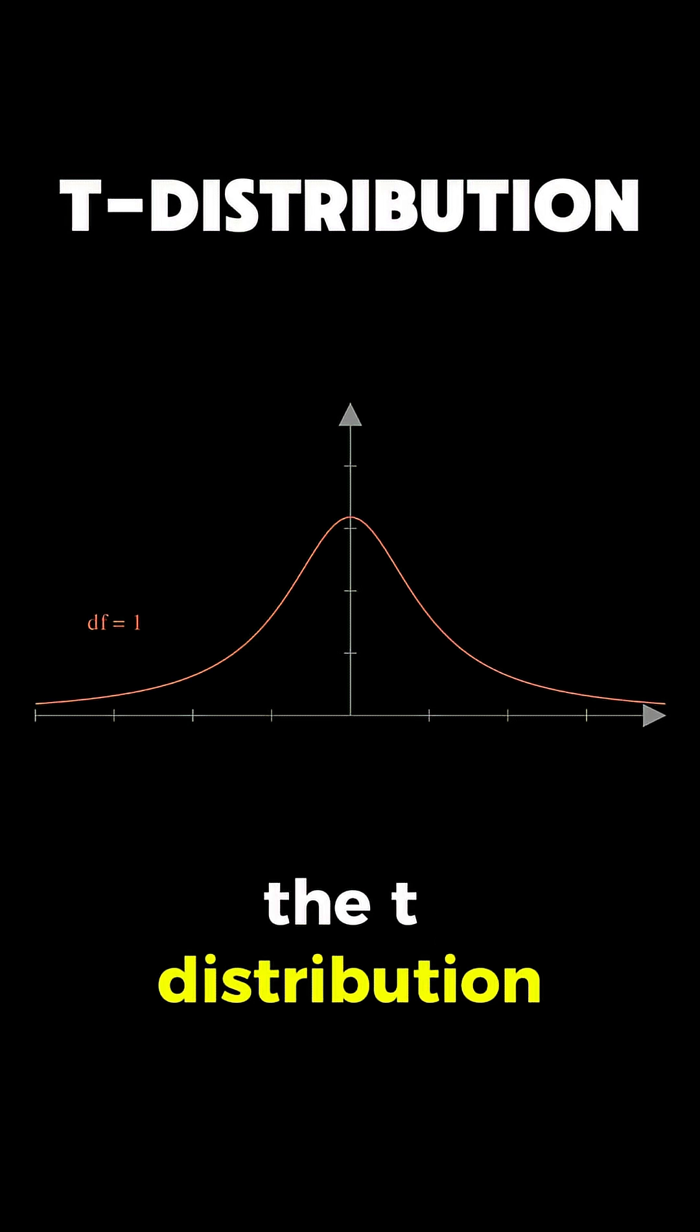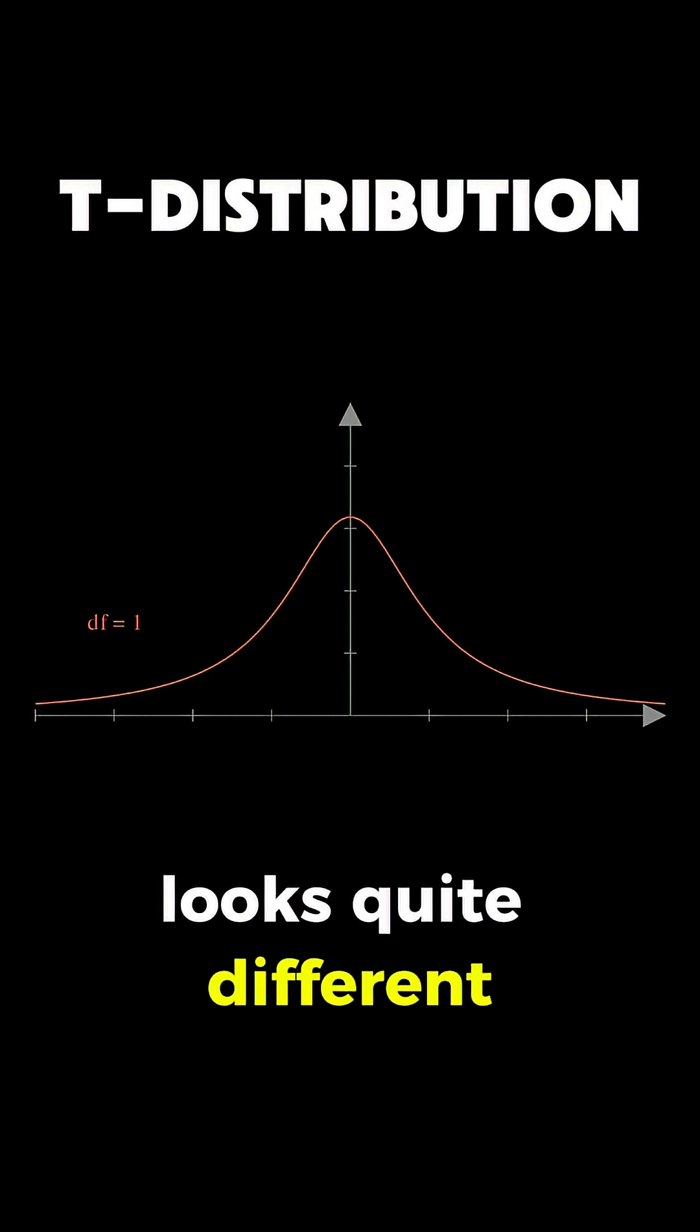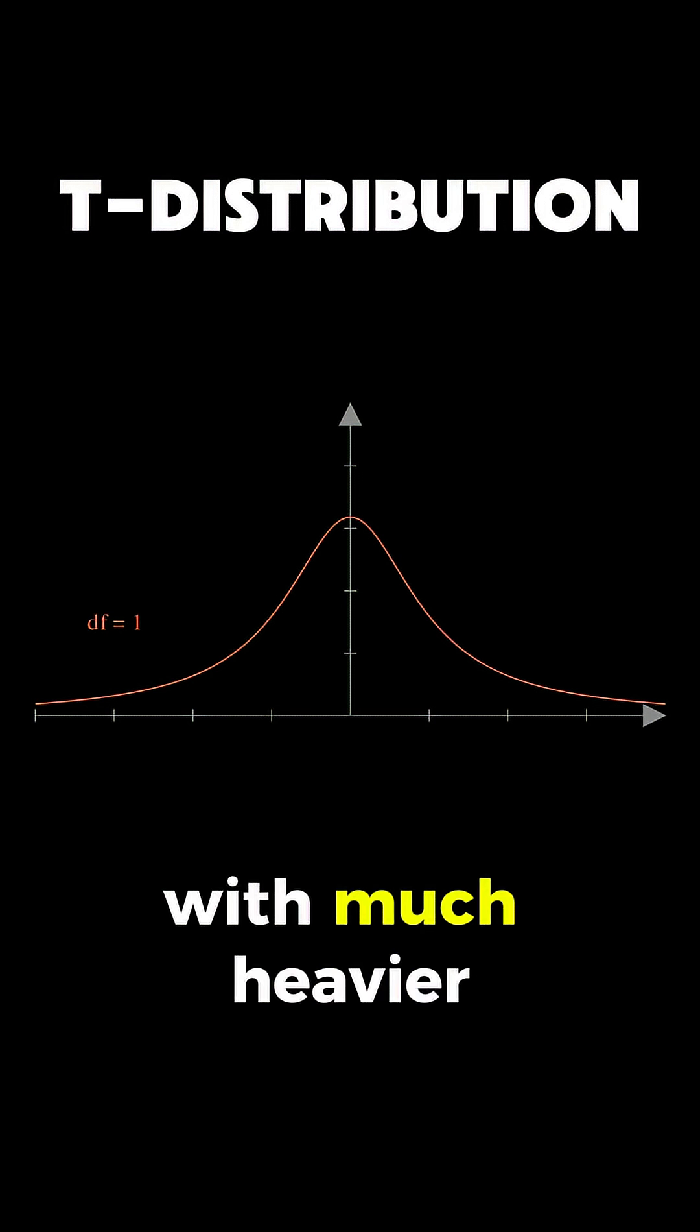When the degrees of freedom are small, like when you have a sample of only 5 or 6 observations, the t-distribution looks quite different from the normal distribution with much heavier tails.